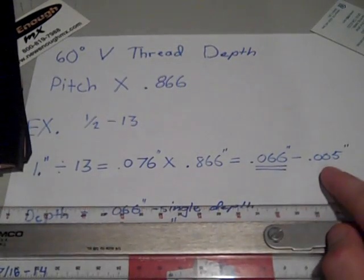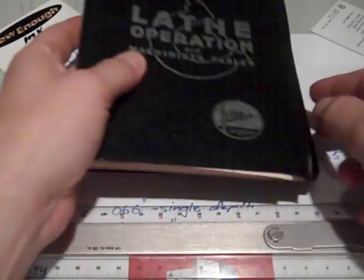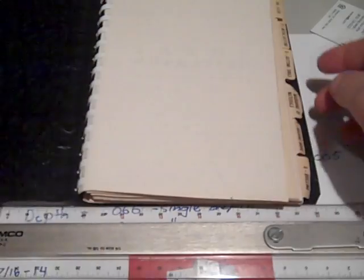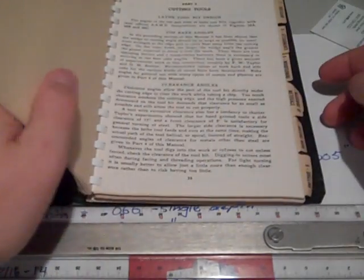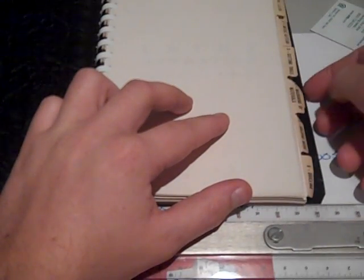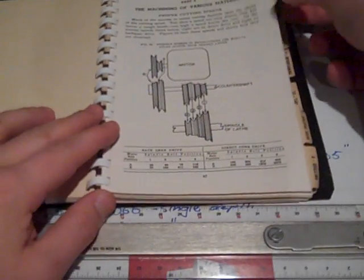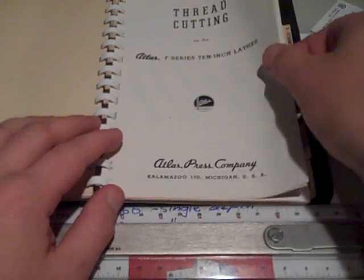I know this is hard to see, but I wrote minus 5 thousandths from this dimension. I basically wrote that down there because this is only a ballpark to get you in the region, and I don't want anybody sending me any mean comments saying they used my formula and they cut the threads too small.